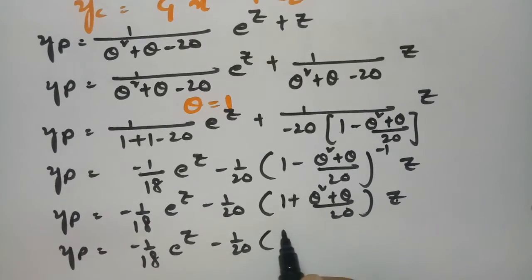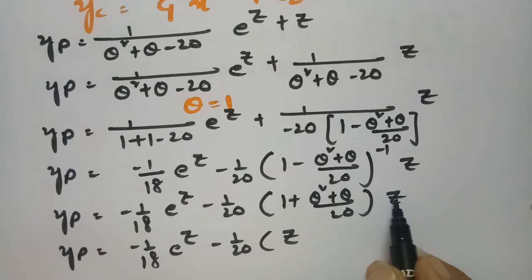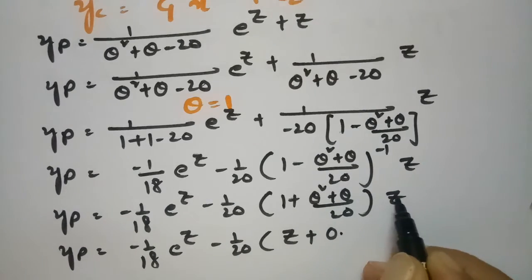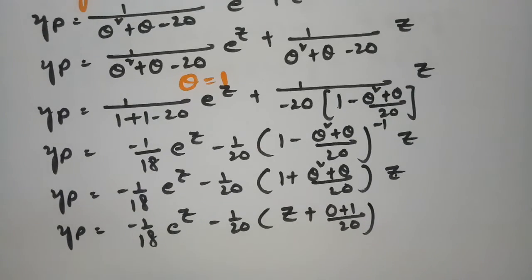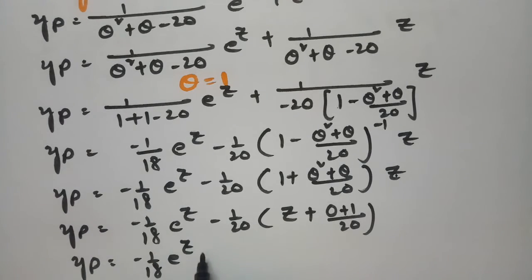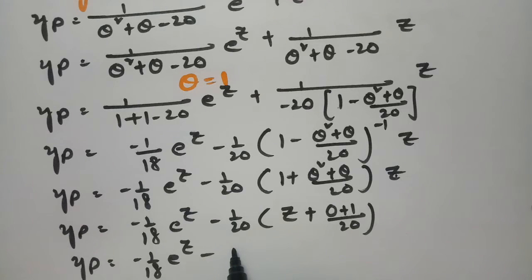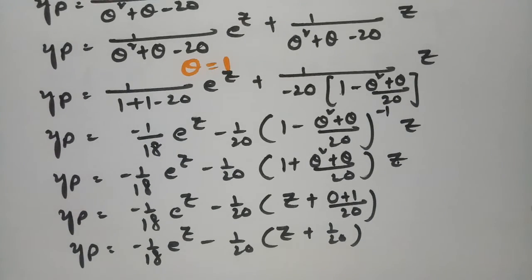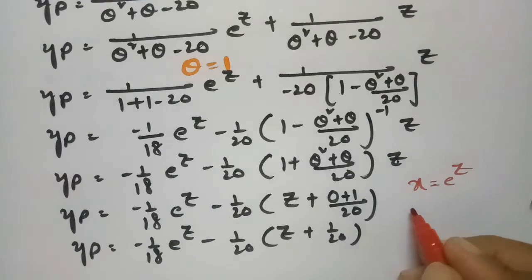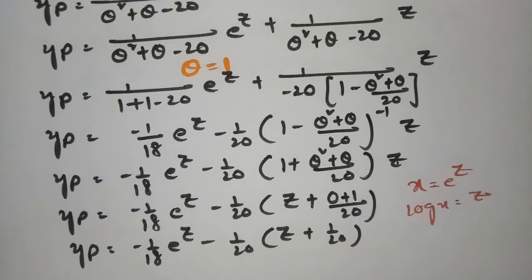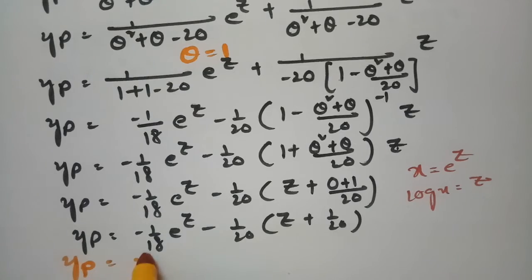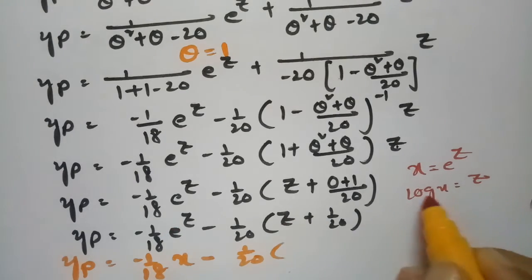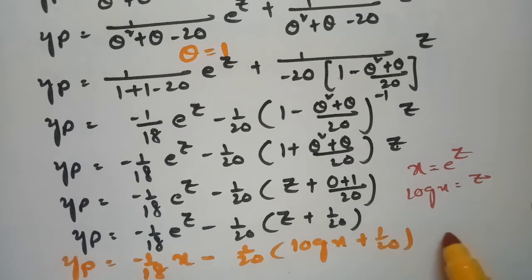So yp = −(1/18)e^z − (1/20)·z + (1/20)·(1/20). Since θ(z)=1 (derivative of z is 1) and θ²(z)=0: yp = −(1/18)e^z − z/20 + 1/400. Replacing back: e^z = x and z = log x, so yp = −x/18 − (log x)/20 + 1/20. This gives yp = −x/18 − (1/20)·log x + 1/20.